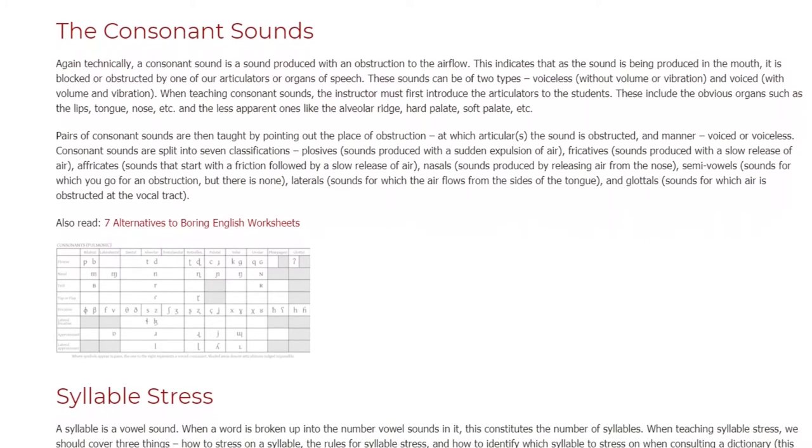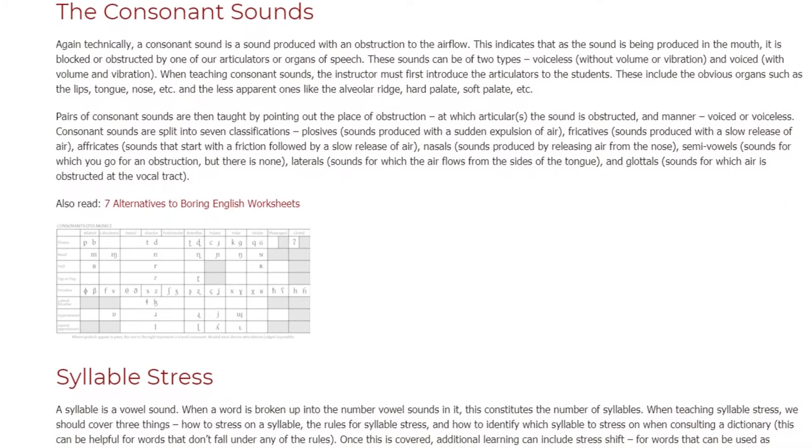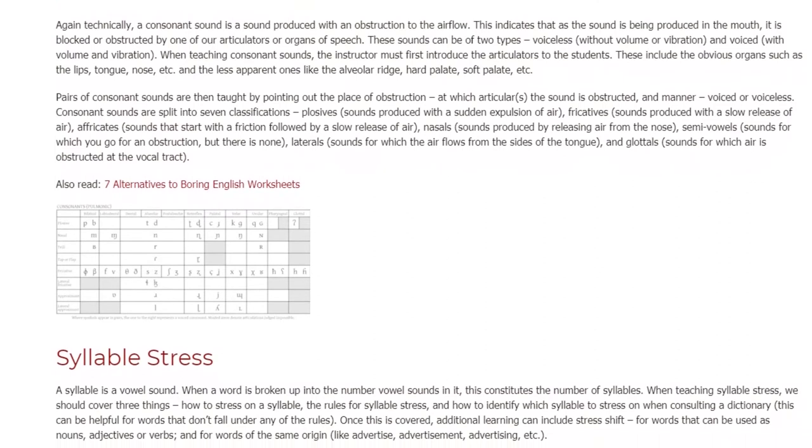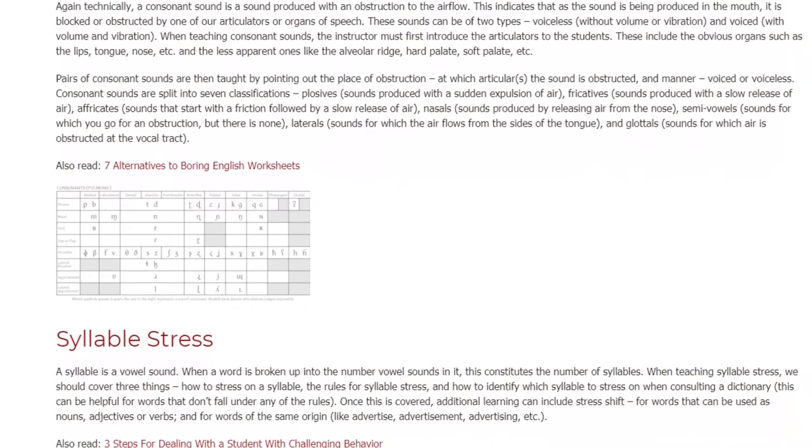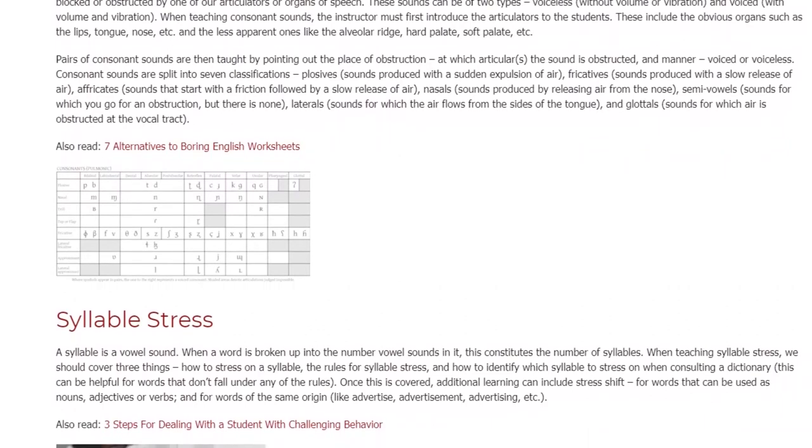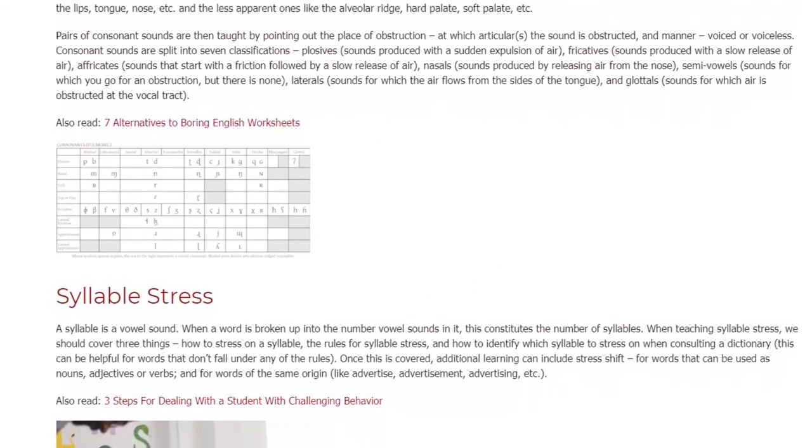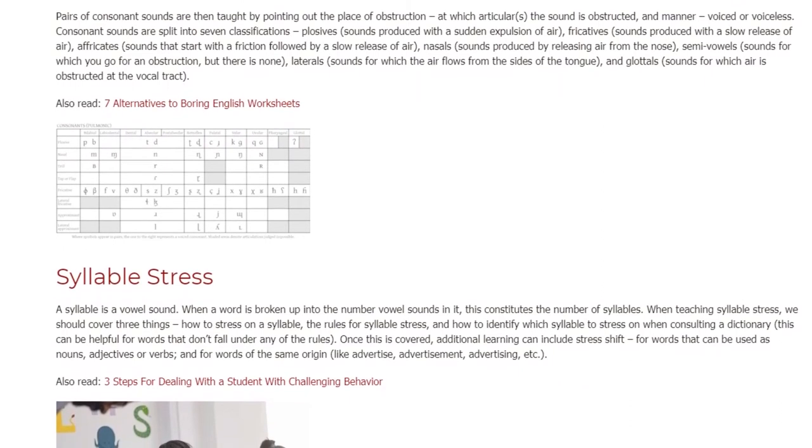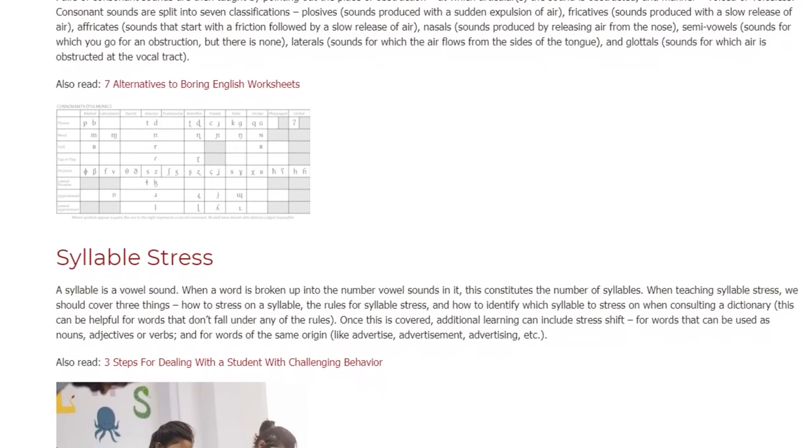Plosives: sounds produced with a sudden expulsion of air. Fricatives: sounds produced with a slow release of air. Affricates: sounds that start with a friction followed by a slow release of air. Nasals: sounds produced by releasing air from the nose. Semivowels: sounds for which you go for an obstruction, but there is none. Laterals: sounds for which the air flows from the sides of the tongue. And glottals: sounds for which air is obstructed at the vocal tract.